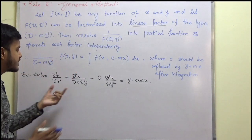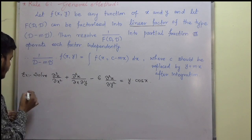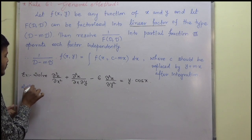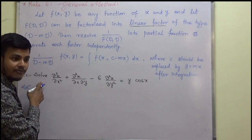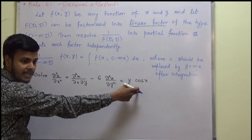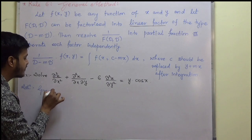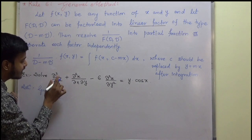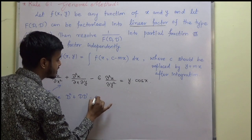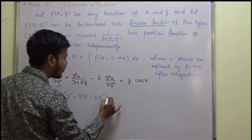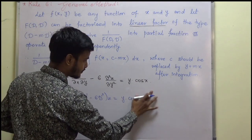Now let us take a problem on rule number 6. We have to find the complementary function as well as the particular integral because of the right-hand side. The given equation is: D² + DD' minus 6D'² operating on z equals y cos x.